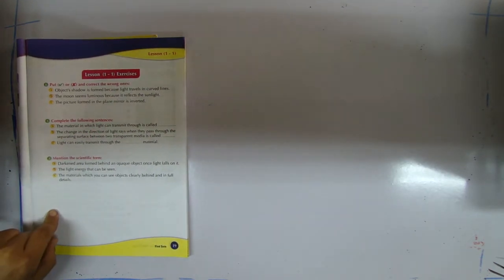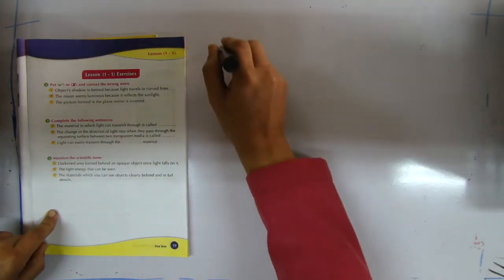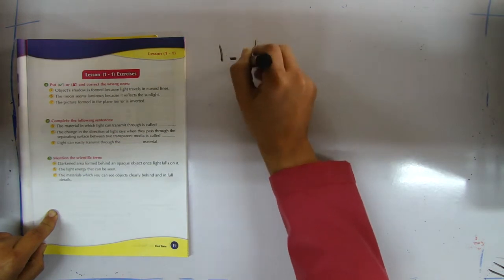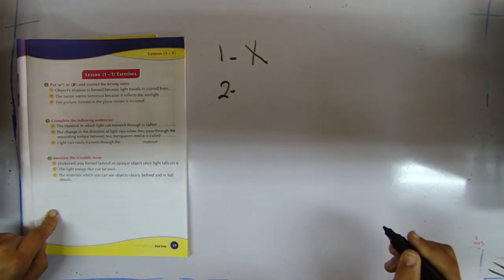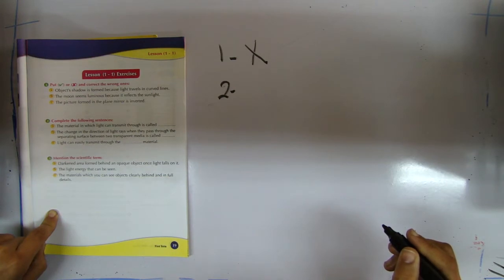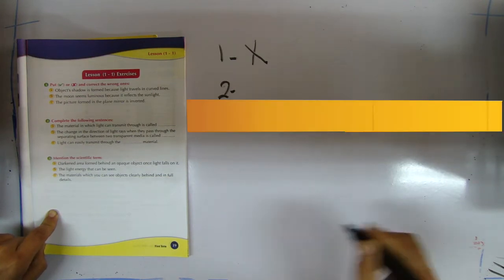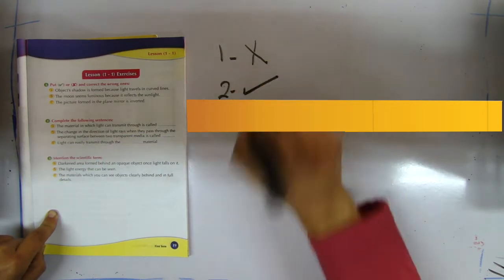Question number one: put right or wrong and correct the wrong one. Number one: object shadow is formed because light travels in curved lines. The answer is wrong, because the shadow is formed because light travels in straight lines, not in curved lines. Number two: the moon seems luminous because it reflects the sunlight. It's correct, so number two is right.